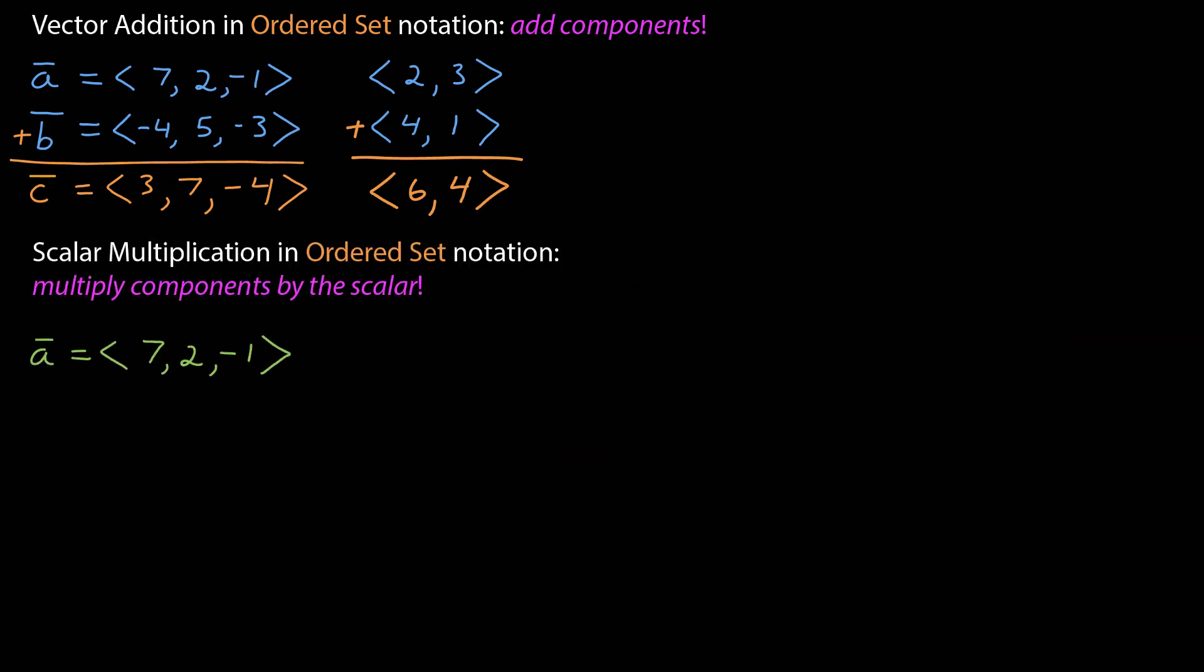Now let's do multiplication by a scalar. You simply multiply the components by the scalar. So if a has an ordered set of 7, 2, and negative 1, 3a is 21, 6, and negative 3.